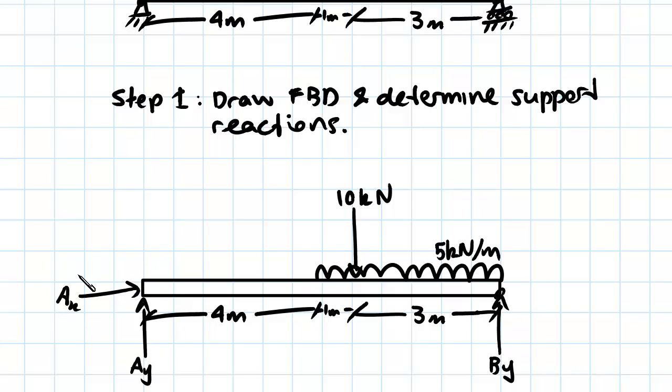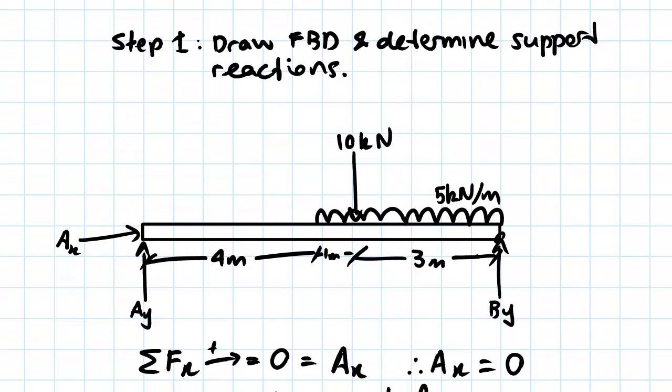So there are three unknowns: we have AX, AY and BY, so now we have to apply our equilibrium equations to solve for these three unknowns.